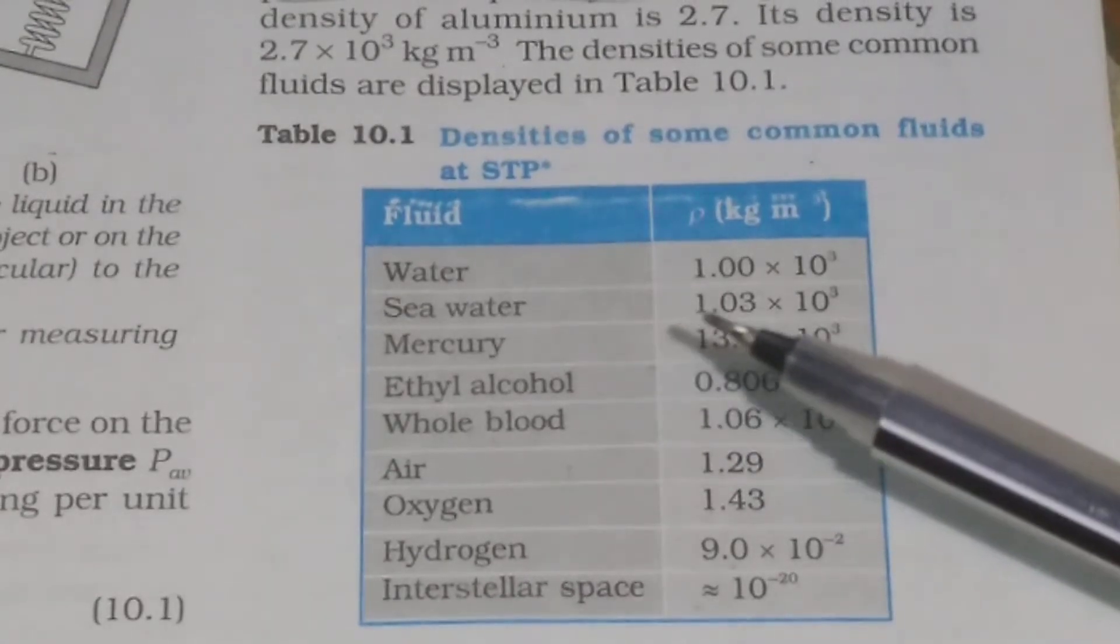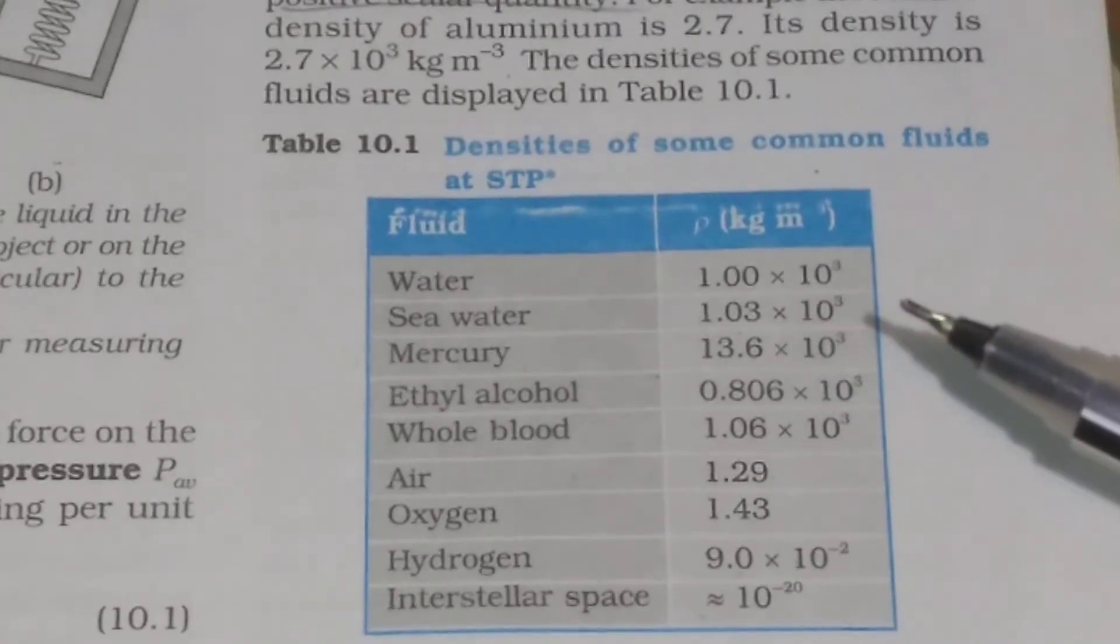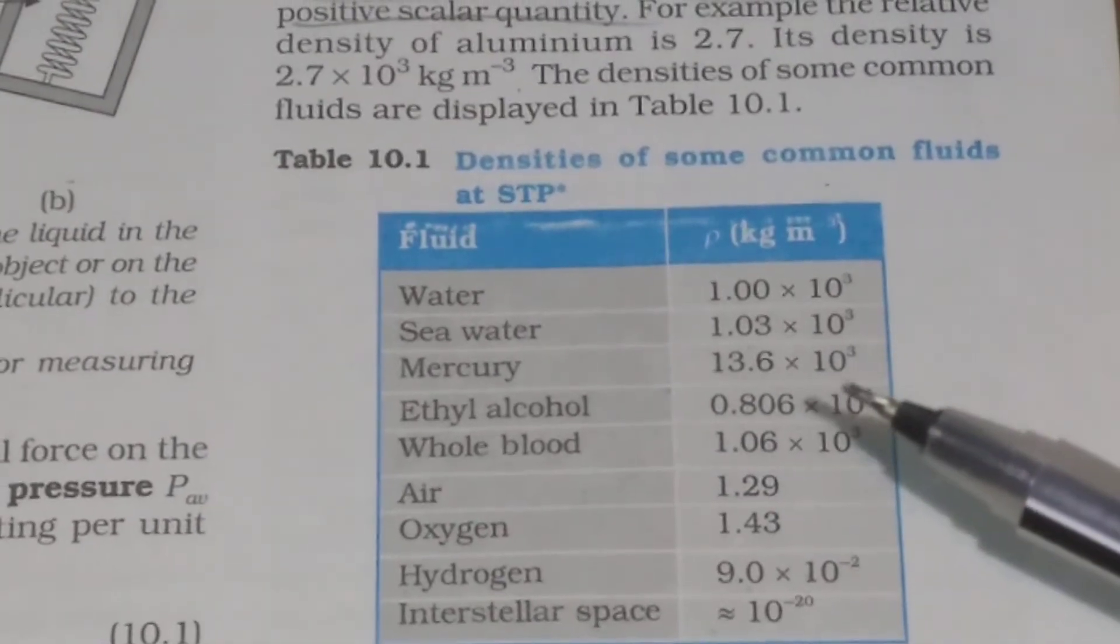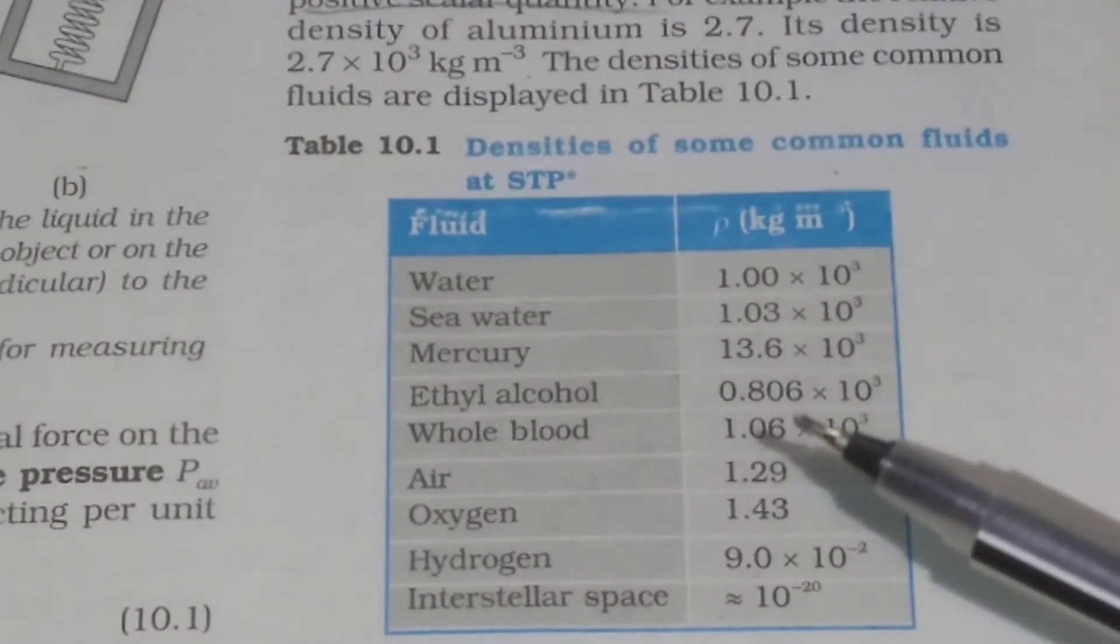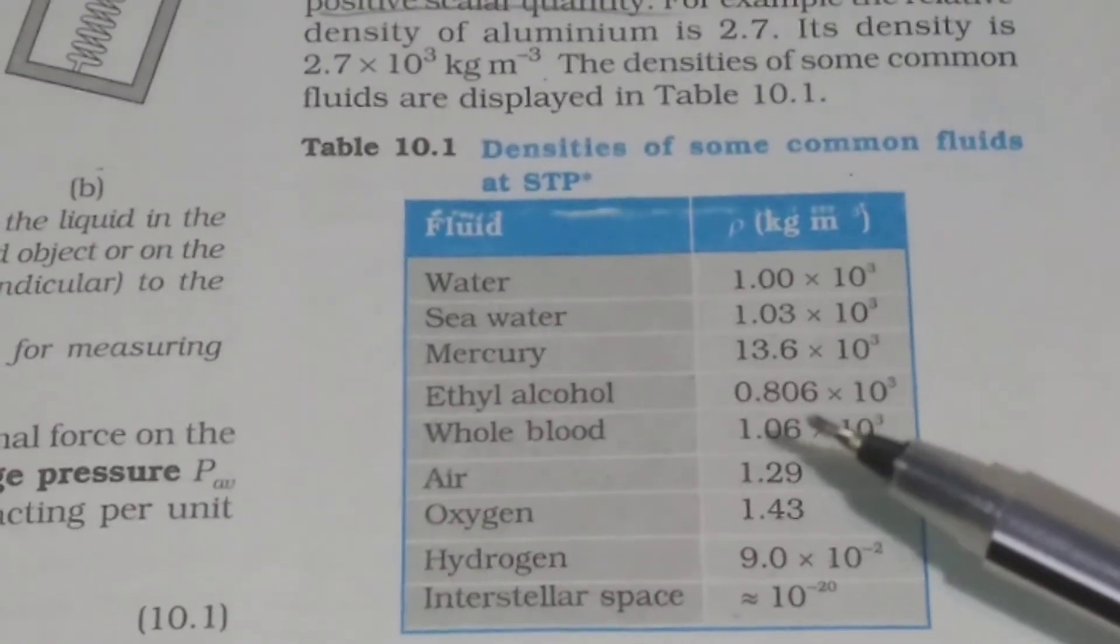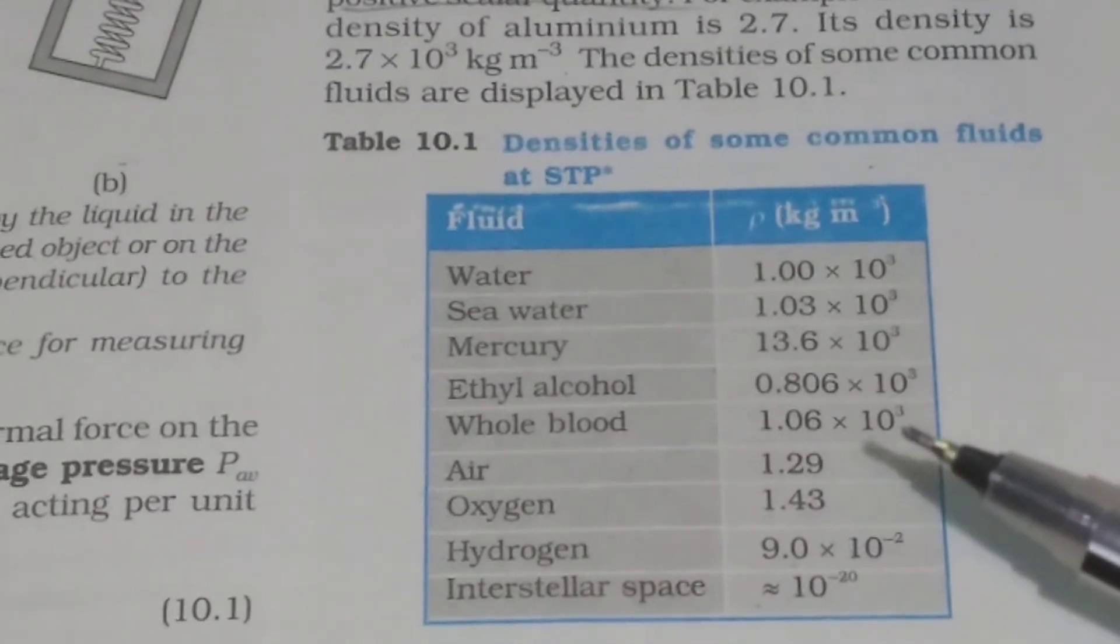Sea water, the density of sea water is 1.03 into 10 to the power 3 kg per meter cube. For mercury, it is 13.6 into 10 to the power 3. For ethyl alcohol, it is 0.806 into 10 to the power 3. For whole blood, it is 1.06 into 10 to the power 3.